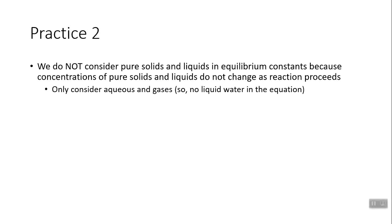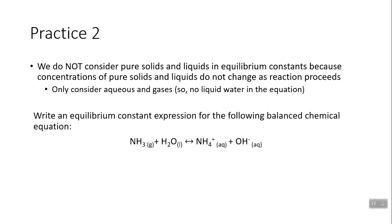Before example two, here's an important rule: we do not consider pure solids and pure liquids in equilibrium constants, because their concentrations do not change as the reaction proceeds. We only consider aqueous and gas substances. In this example, ammonia is gas, water is liquid, ammonium is aqueous, and hydroxide is aqueous. So we write the products NH₄⁺ and OH⁻ in the numerator, and ammonia in the denominator — leaving water out because it's a liquid.